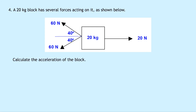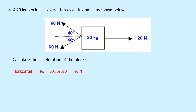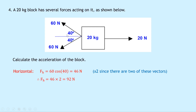Question 4 says a 20 kilogram block has several forces acting on it. Calculate the acceleration of the block. There are two forces of 60 newtons acting at an angle of 40 degrees to the horizontal, and a force of 20 newtons pulling the block to the right. We analyse one of the 60 newton forces first since both are identical. The horizontal component FH equals 60 cos 40 — cos goes across — which equals 46 newtons. Since there are two identical vectors, we multiply by two: FH equals 46 times 2, which equals 92 newtons combined.